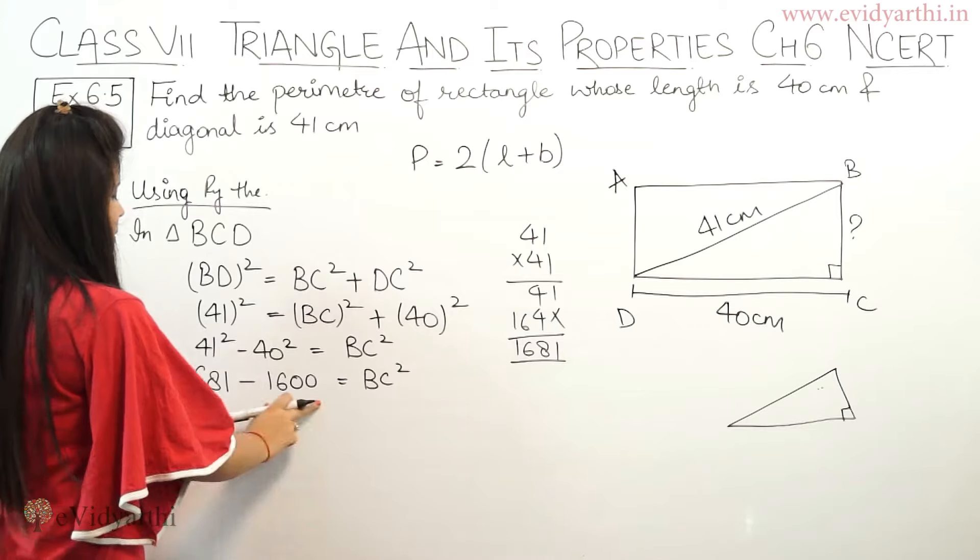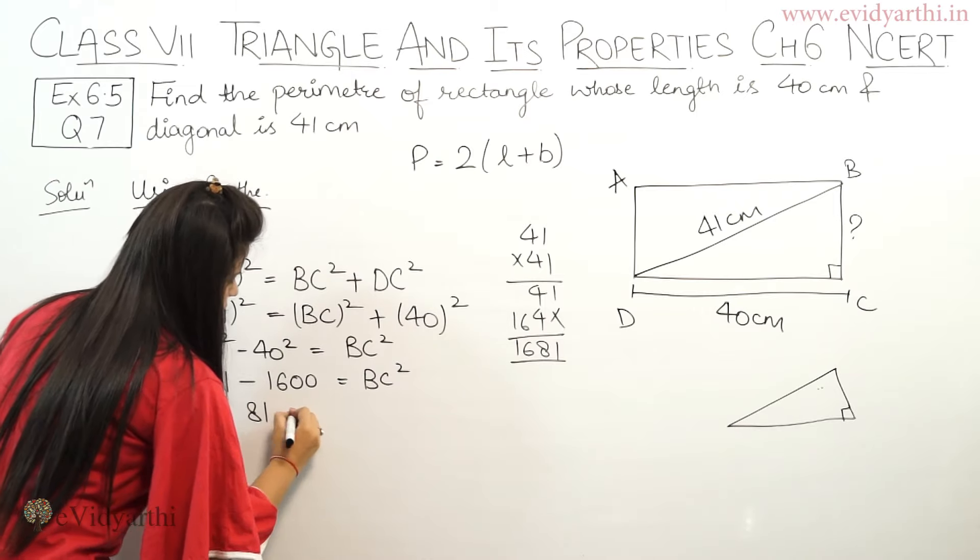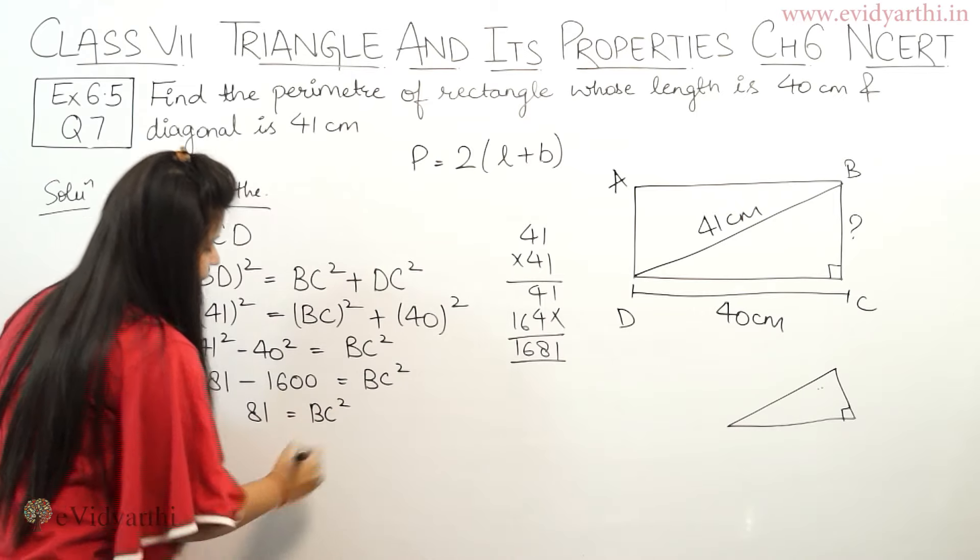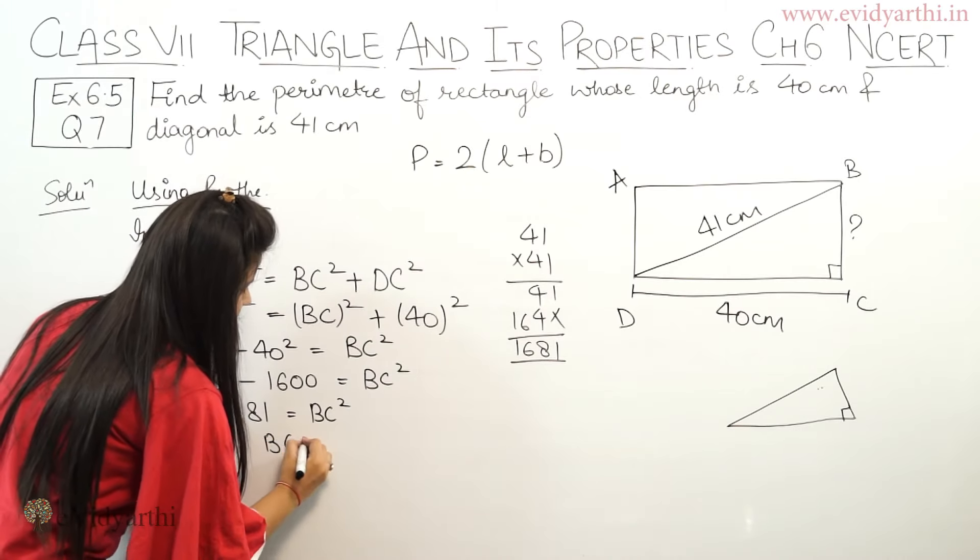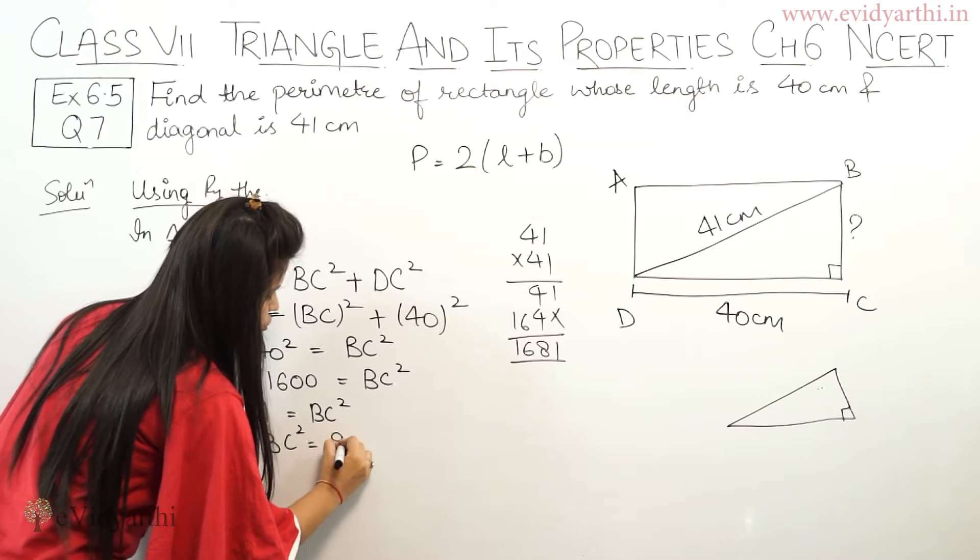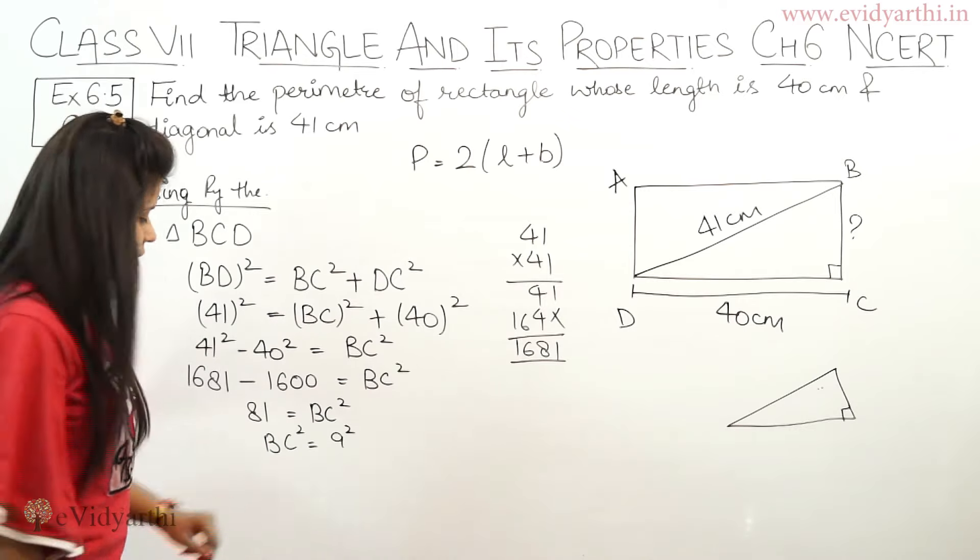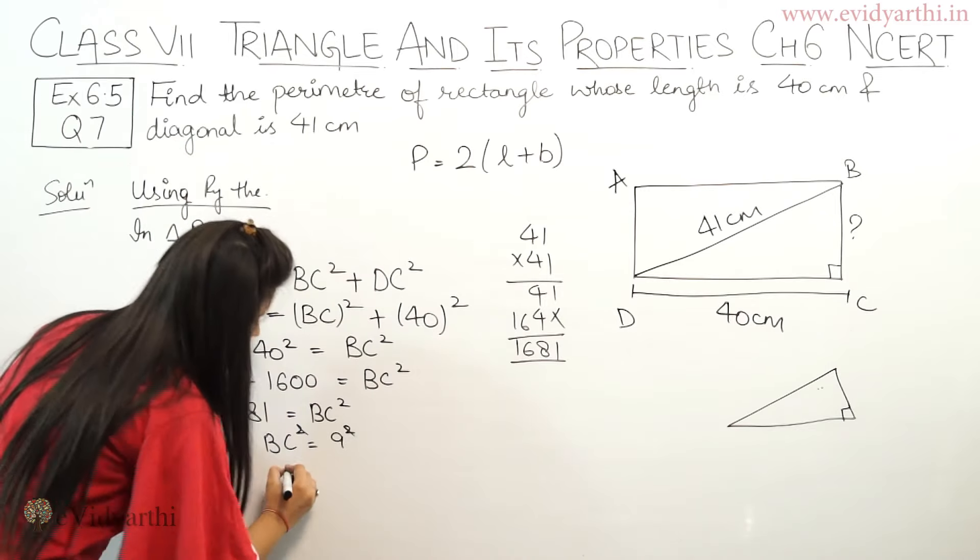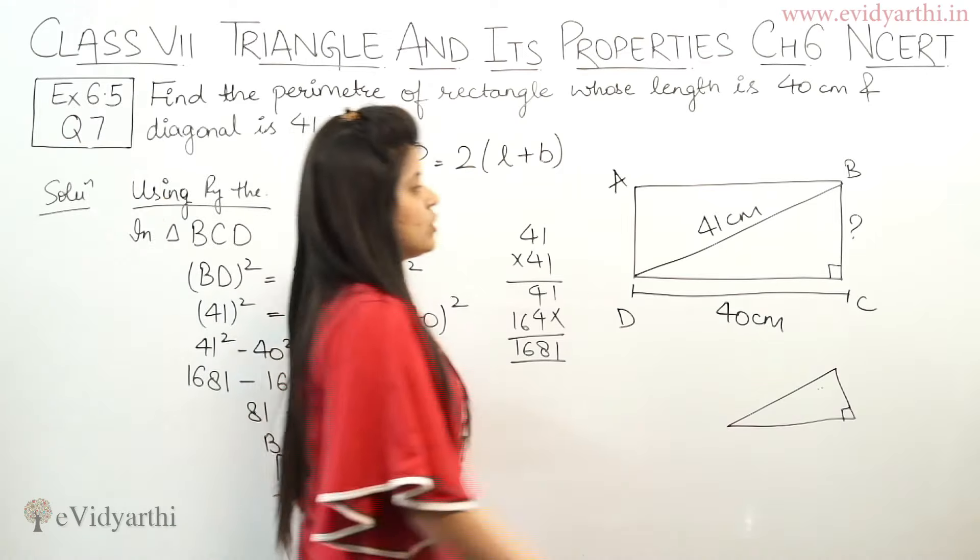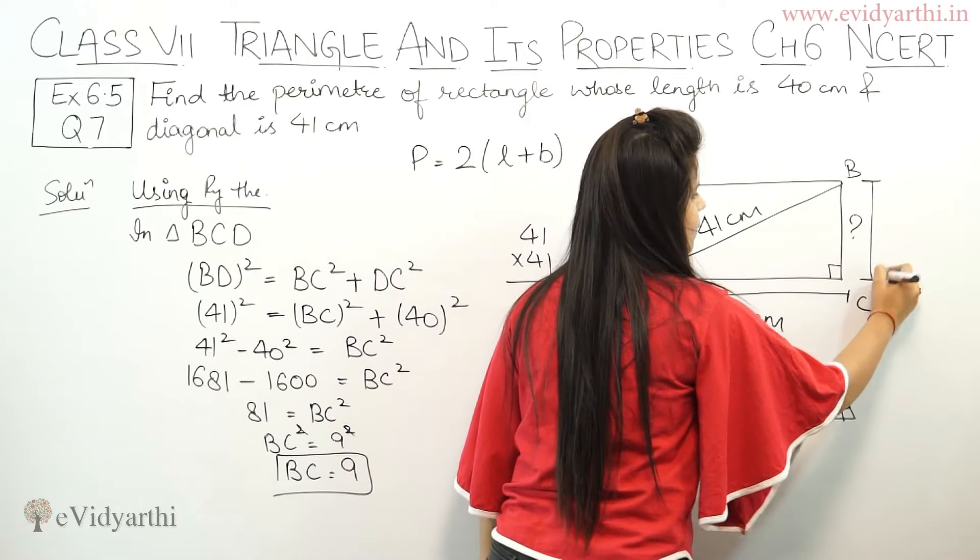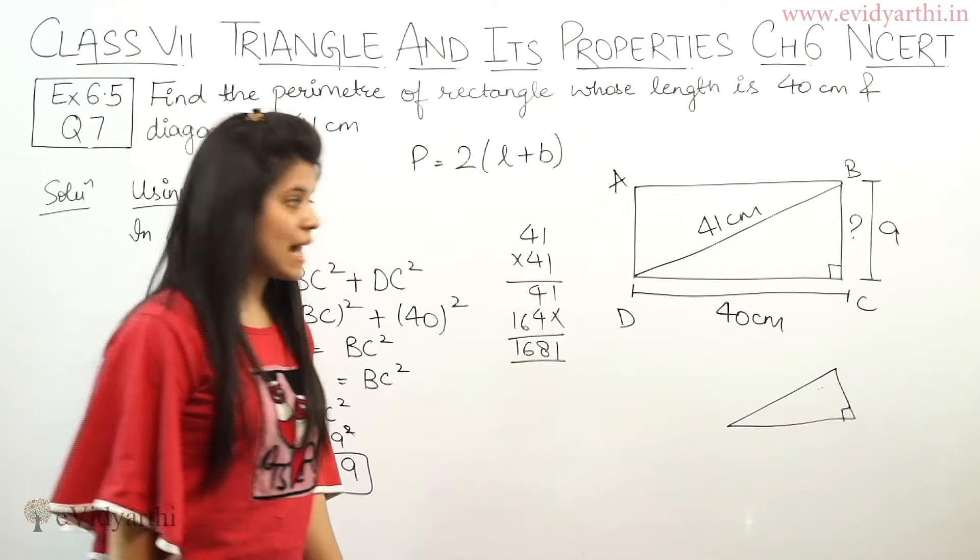Now let's subtract this. 1681 minus 1600 will be 81. So 81 equals BC squared. We need to find BC. So BC squared equals 9 squared, because 9 times 9 is 81. So we can write 81 as 9 squared. Squares cancel. Now BC equals 9. So this length that we have is 9, 9 centimeter.